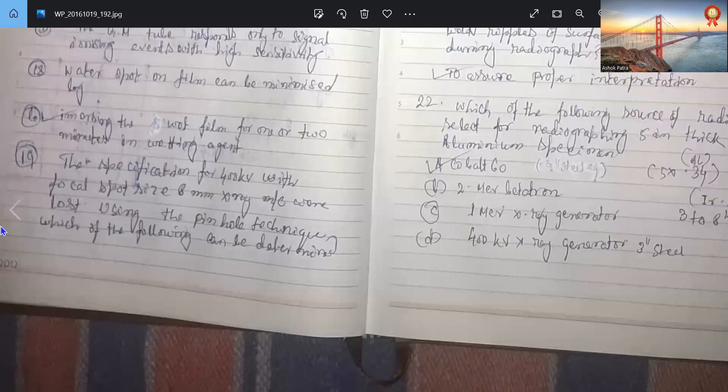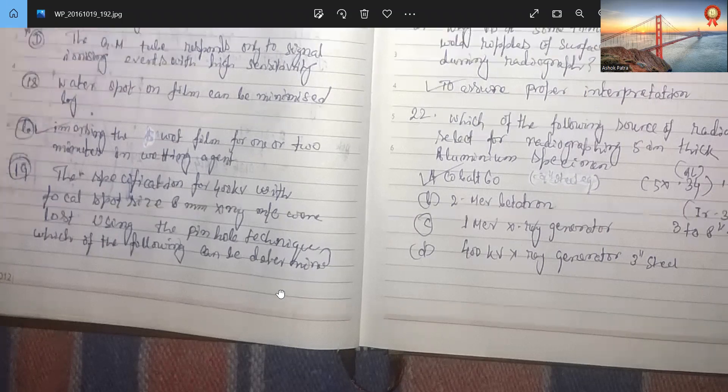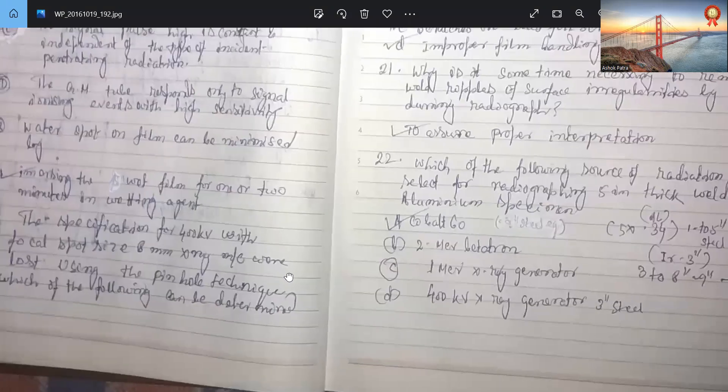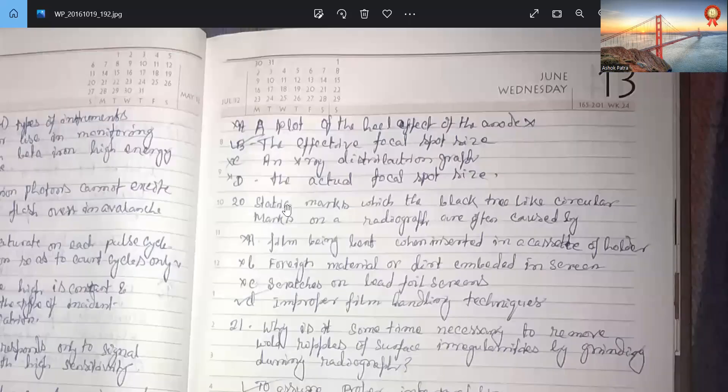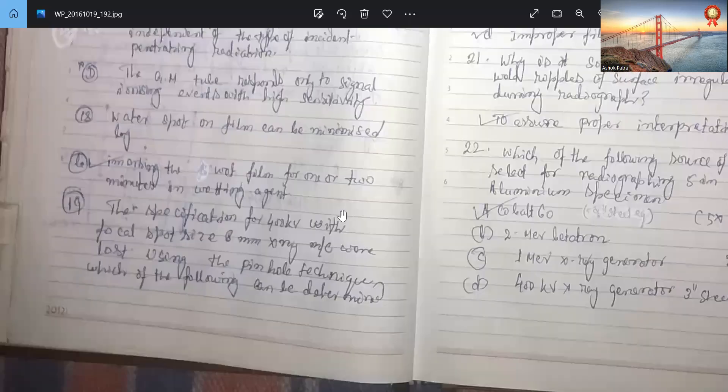The specimen for specification for 400kV with focal spot size 8mm X-ray machine were lost using the pinhole technique. Which of the following can be determined? The effective focal spot size. So by pinhole method you can find the effective focal spot size.